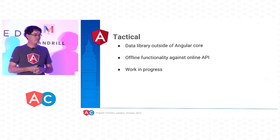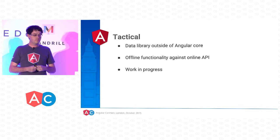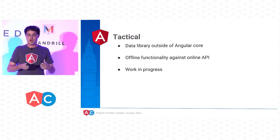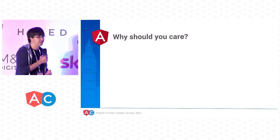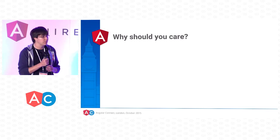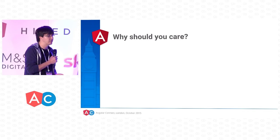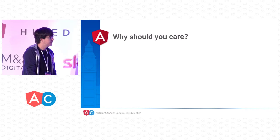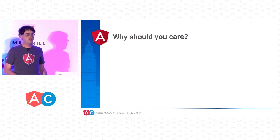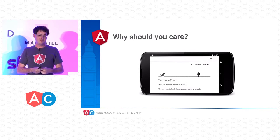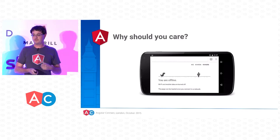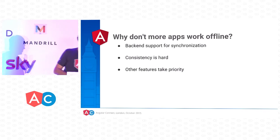That brings us to Tactical — a new data access library we're working on outside of the Angular core. Its goal is to make it easier to write applications with good offline support against an API that's not necessarily designed for it. Why should you invest in building offline applications? After all, Wi-Fi is everywhere and most users have fast 4G connections. The answer is: sometimes, even today, users find themselves without a connection. And not being able to access your data when you want it is a frustrating user experience.